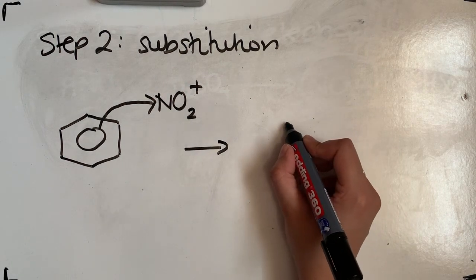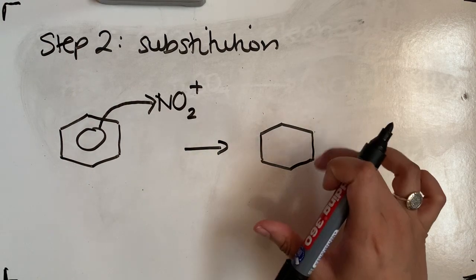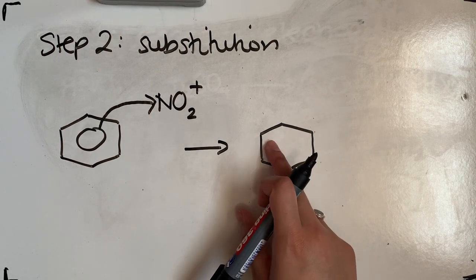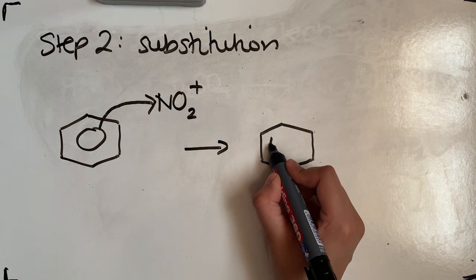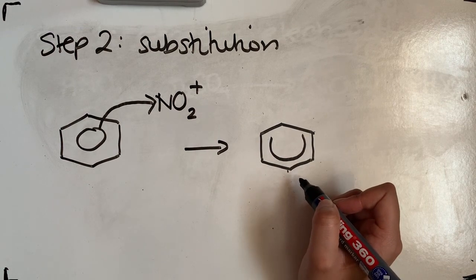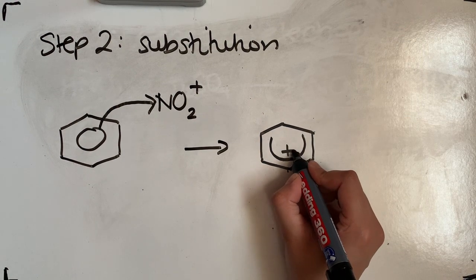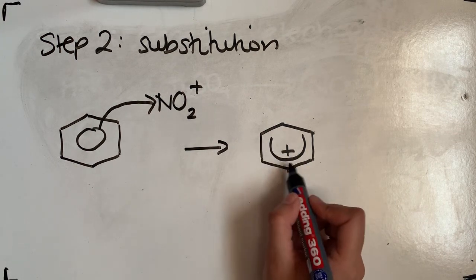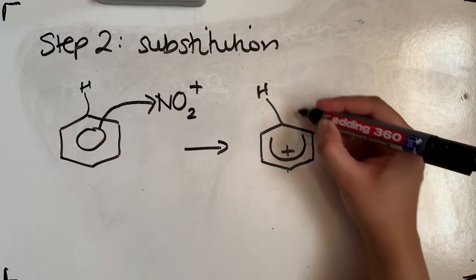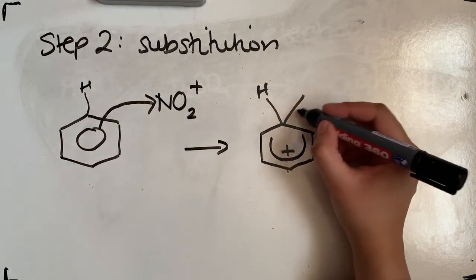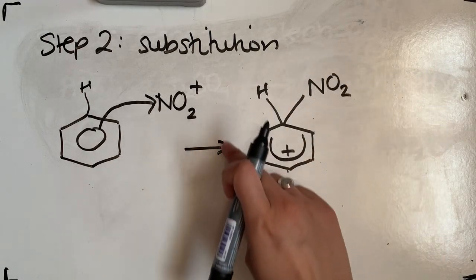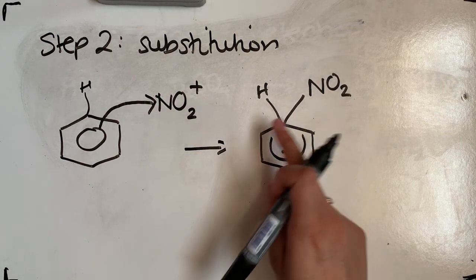The intermediate that forms shows the disrupted delocalized ring — with only four electrons remaining, represented by a horseshoe shape covering five of the carbons in the ring, with a positive charge inside it. A bond has formed from that carbon to the NO₂. This intermediate is very unstable and quickly wants to return to the delocalized structure.